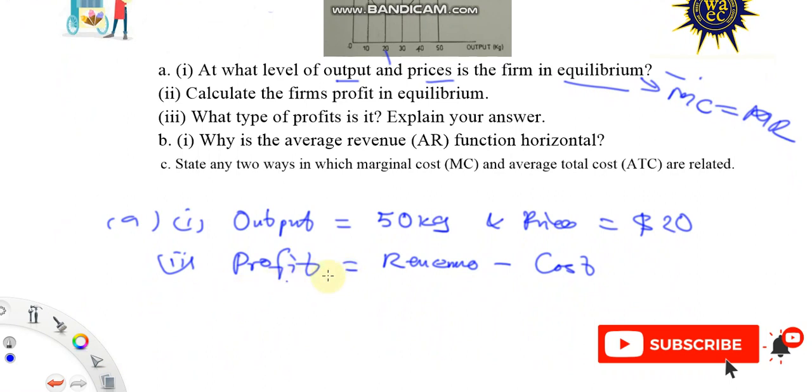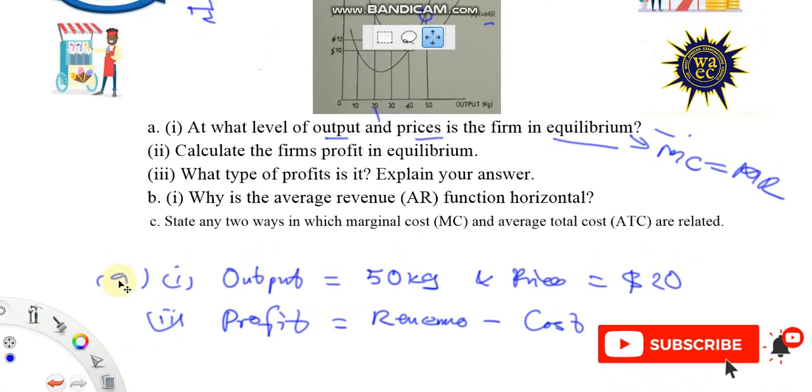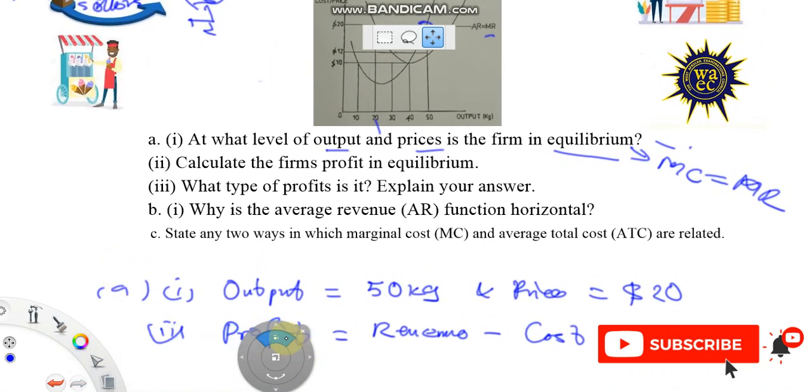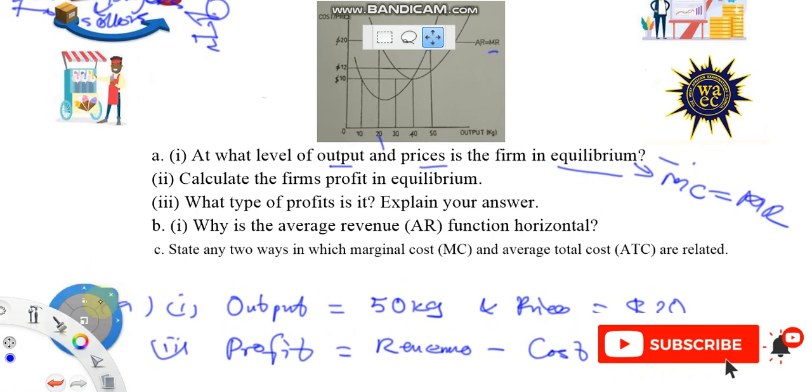So in this case, we're multiplying out these averages. So the average price, which is 20 units, by the number of units we sold. So the profit is going to be the $20 we're selling each times the number of units we sold, which is 50 units. And then we're going to subtract from it the cost of production.